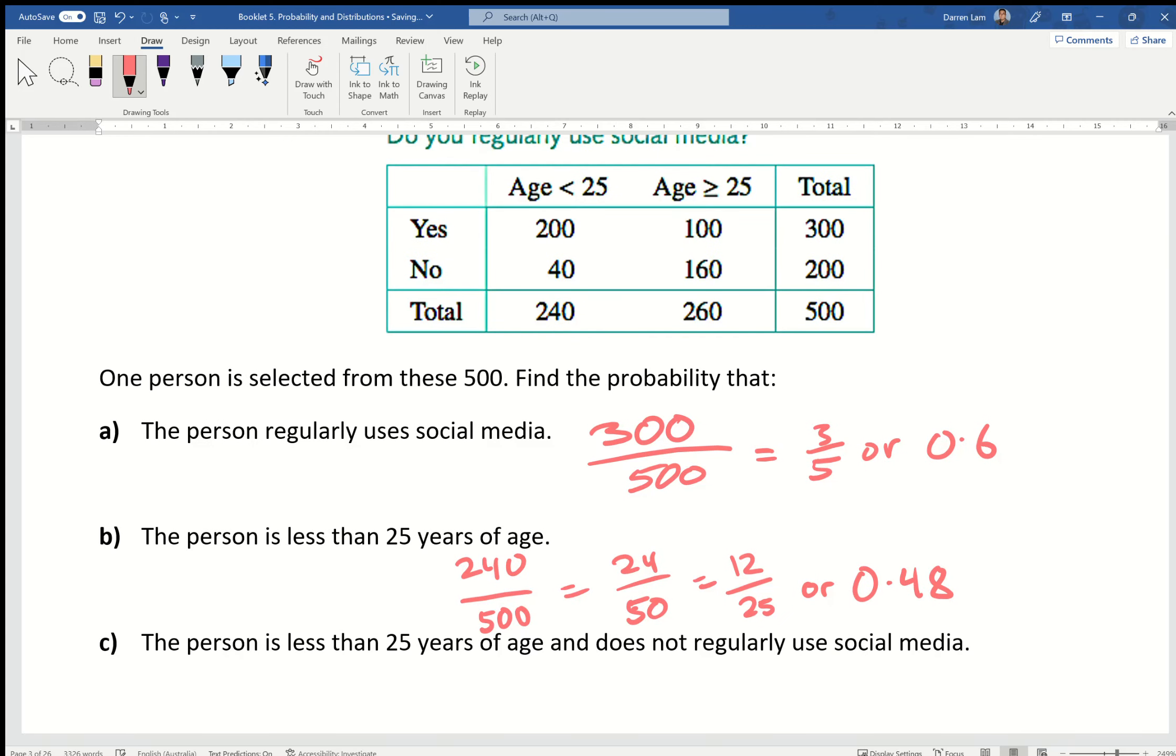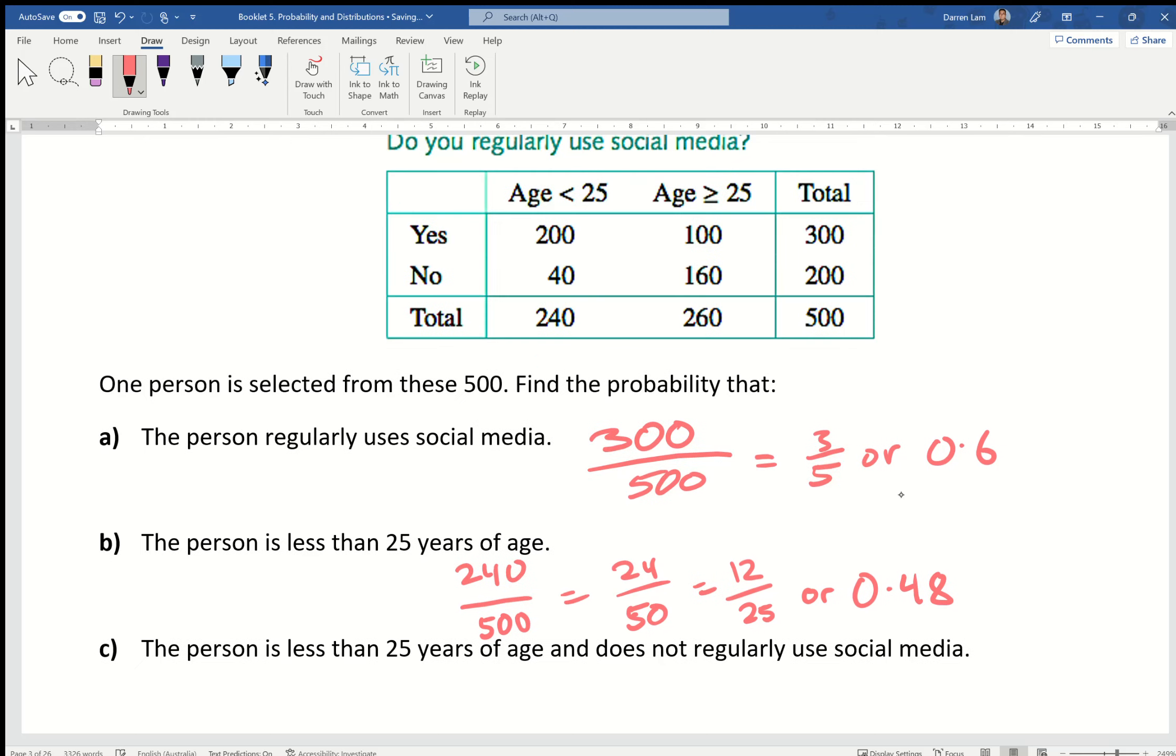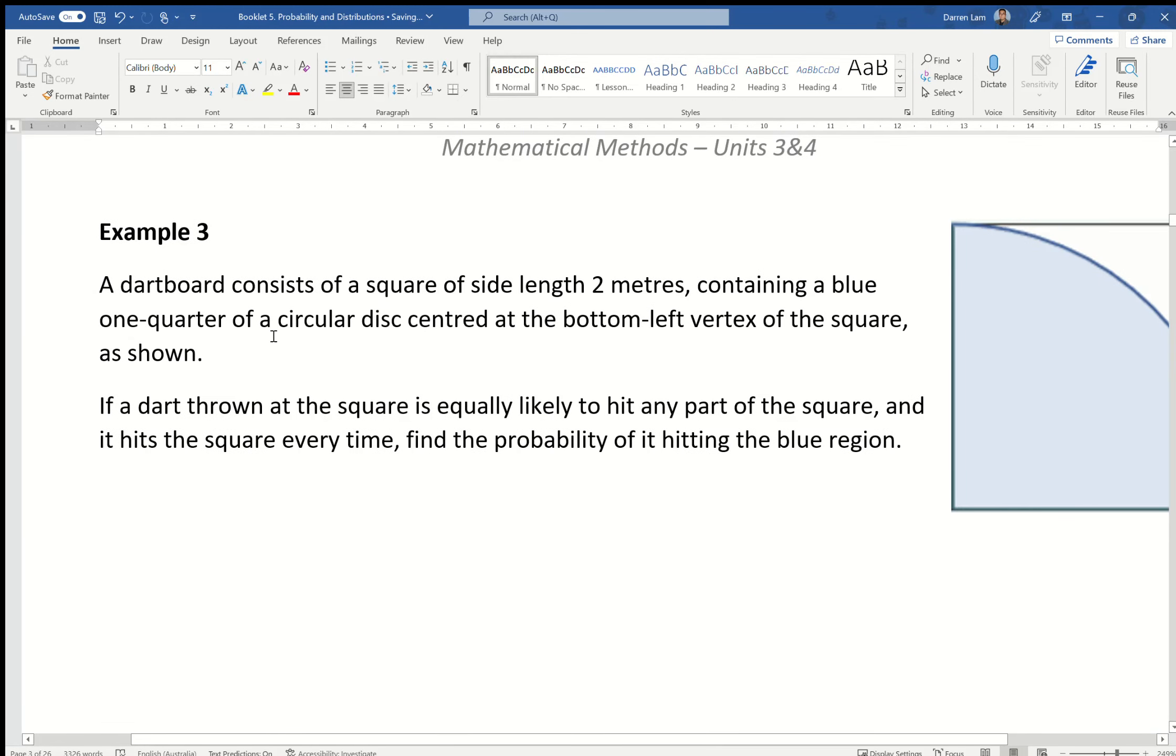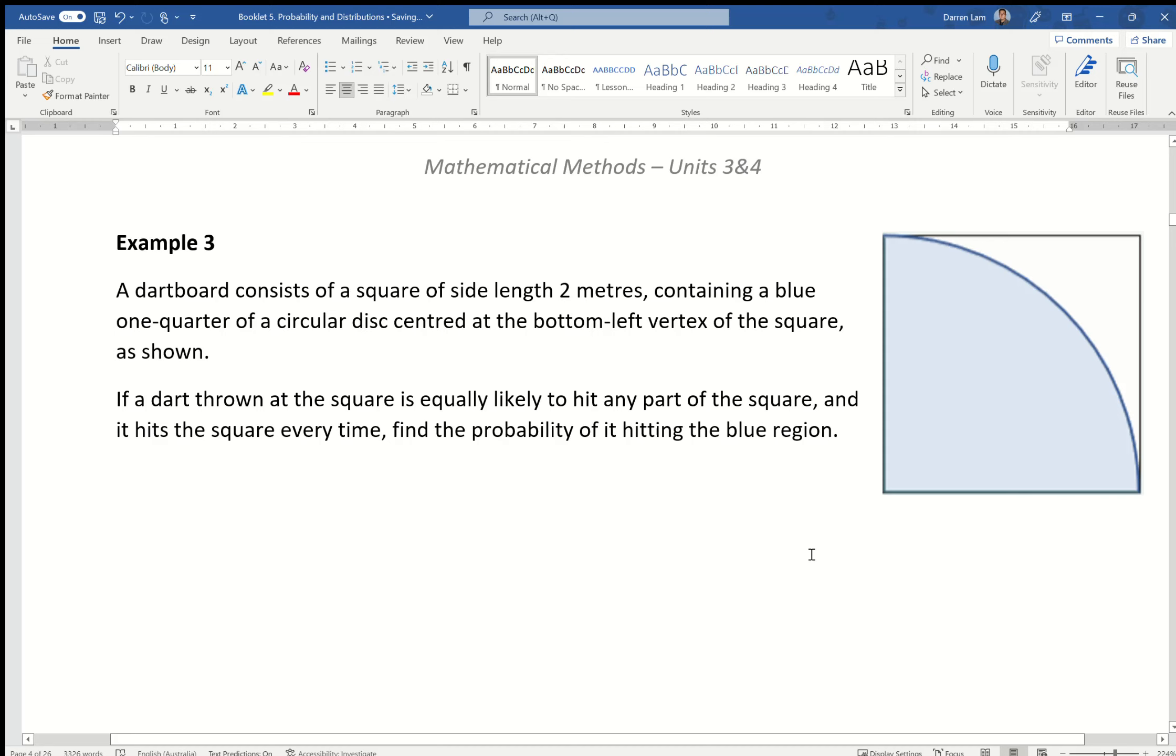Finally, the person is less than 25 years of age and does not regularly use social media. Normally if you're not given this table you'd have to use certain formulas, but we're given the table, just use it. It says the person is less than 25, so that's this column, and does not, so that's this row. Where they overlap would be the 40, and therefore you write 40 over 500, which simplifies to 2 over 25 or 0.08.